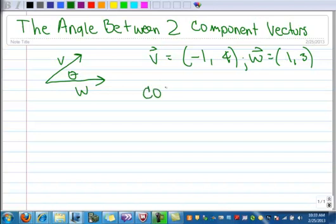So the formula that we use to find the angle between them is the cosine of theta. That's going to be the dot product of the two vectors divided by the magnitude of v multiplied by the magnitude of w. So let's see how this works.